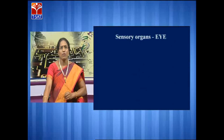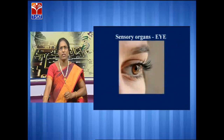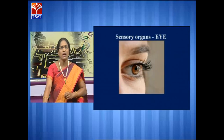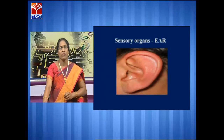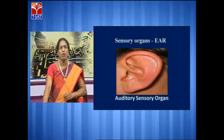Now, we have different sensory organs in our body. The first one is eye. What will the eye do? The eye will help us to see what is happening in our surroundings — so it is a visual sensory organ. Next, we have the ear. What will the ear do? The ear will help us to hear what is happening in our surroundings — so it is an auditory sensory organ.